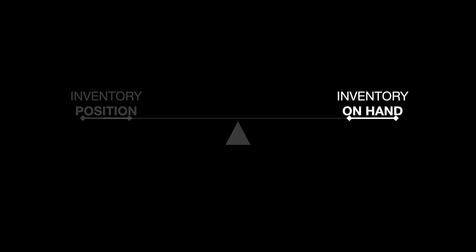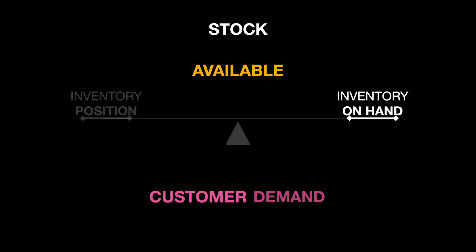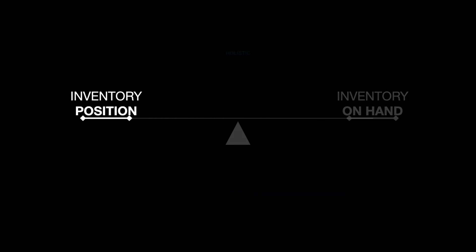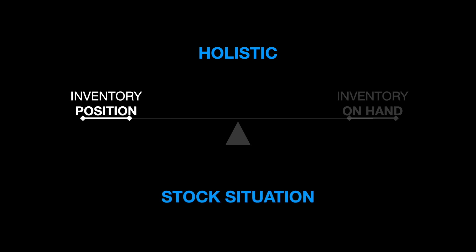Inventory on hand is stock available in a firm's warehouse to service customer demand. Inventory position, however, is a more holistic view of a firm's stock situation.